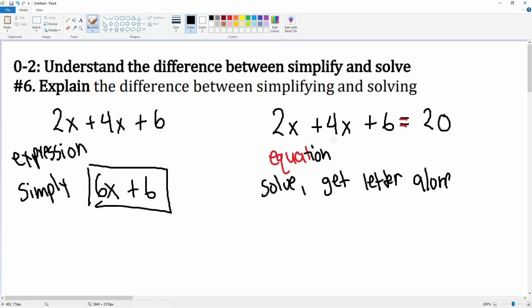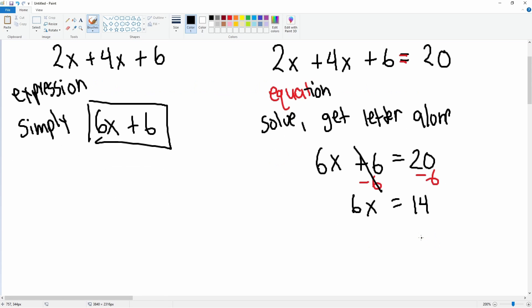It includes simplifying, so 2x plus 4x becomes 6x plus 6 is equal to 20. Now we're trying to get the x alone, so we apply the inverse operation. Minus 6 to both sides, this cancels, leaving you with 6x. There's a plus 0 here but no one writes it. Equals to, this is 14.